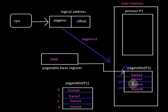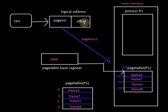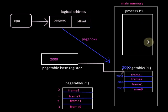Memory location 2002 contains the frame to which page number 2 is mapped — and the frame is frame number 1. We got the frame number, and the frame number appended with the offset gives us the physical address, then we can access the byte within the process.